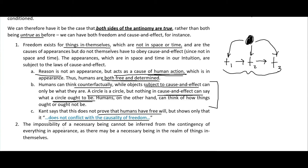The impossibility of a necessary being cannot be inferred from the contingency of everything in appearance, as there may be a necessary being in the realm of things in themselves. We never experience anything as absolutely necessary in day-to-day life, but something existing outside of experience in the realm of things in themselves could be absolutely necessary. Therefore, absolute necessity is not incompatible with the fact that we experience everything as contingent.